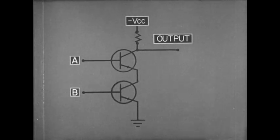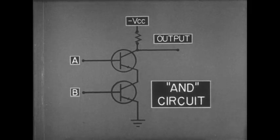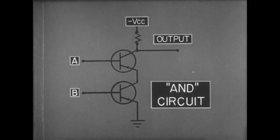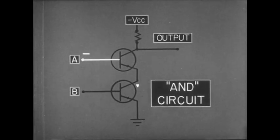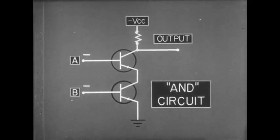Here's another example. This is called an AND circuit. Because it delivers an output only when both input A and input B are present.